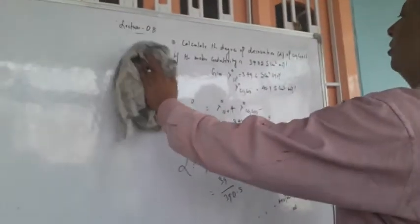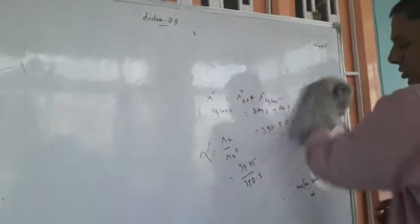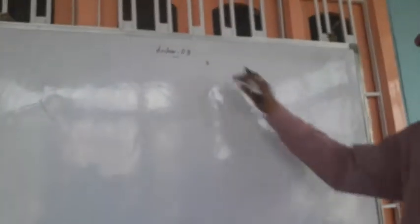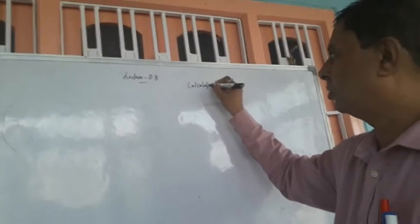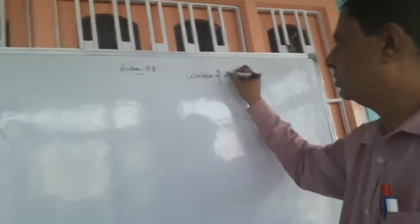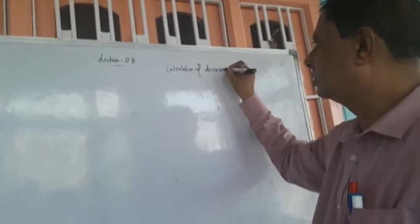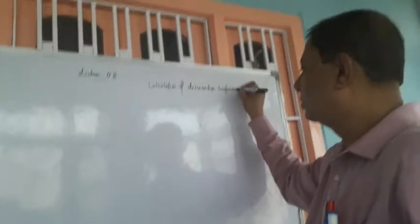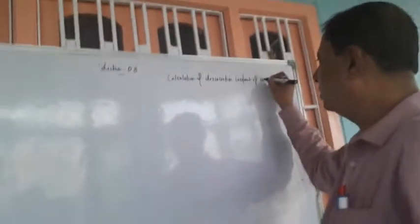The next topic is calculation of ionization constant. How can we calculate the ionization constant or dissociation constant? It is the calculation of dissociation constant of acetic acid — for example, the acetate ion.